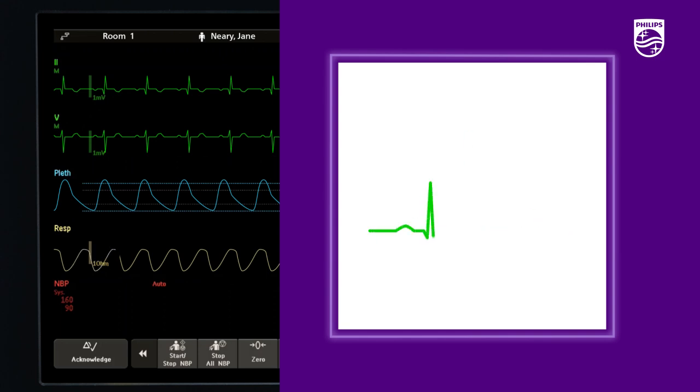An ectopic beat is distinguished from a P wave when it is larger than one-fifth of the average QRS height. The beat should not be clipped and the shape is distinctly different than the normal beat.